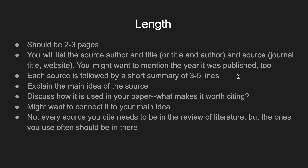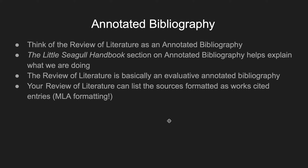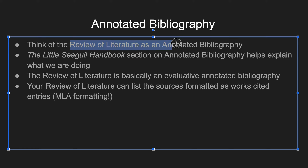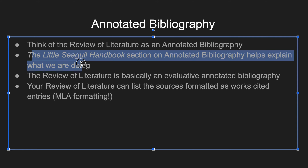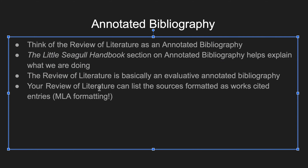You might even connect sources to each other — you might say this source builds off of the previous one because it adds something or did more research. Identify which sources are integral or groundbreaking to the research. That's how research is done. Not every source you're using needs to be in your review of literature, but the really important ones should be there. Think of it like an annotated bibliography — the review of literature is basically an evaluative annotated bibliography, just in a different format. You're telling us why the source is good.